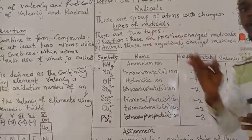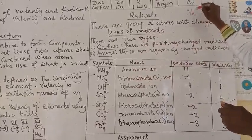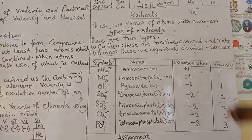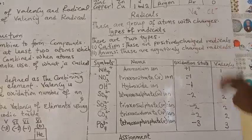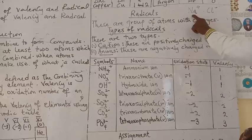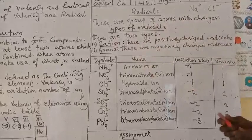We have ions, we have radicals. For example, if you have Na+, this is sodium ion. Because you have a single atom, we call it ion. If you have Cl-, this is also an ion, a negative ion. But radicals are a group of atoms with charges. That means you have more than one atom.